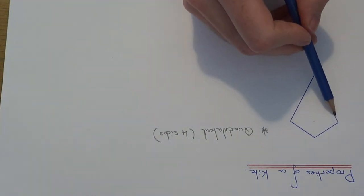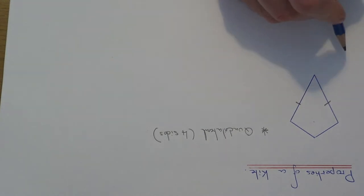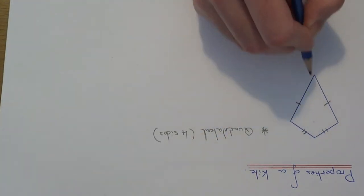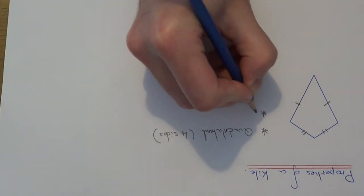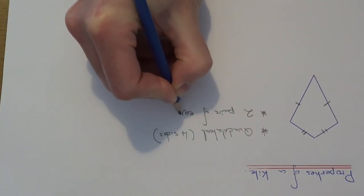Now these two sides here are equal in length and also the top two sides are equal in length. So a kite has two pairs of equal side lengths.